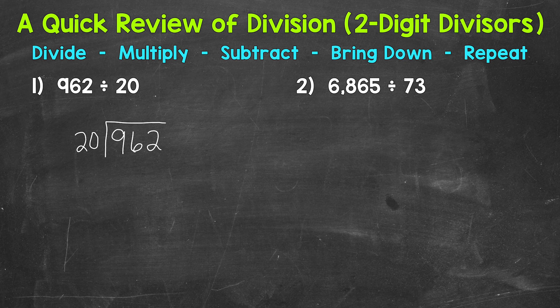Now we're ready to go through the division process, the steps: divide, multiply, subtract, bring down, repeat. And we start with divide. So we have 9 divided by 20. How many whole groups of 20 are in 9? We can't do that. So we need to go to the next digit over and use that 6. So we have the 9 and the 6, so we have 96. 96 divided by 20. How many whole groups of 20 are in 96?